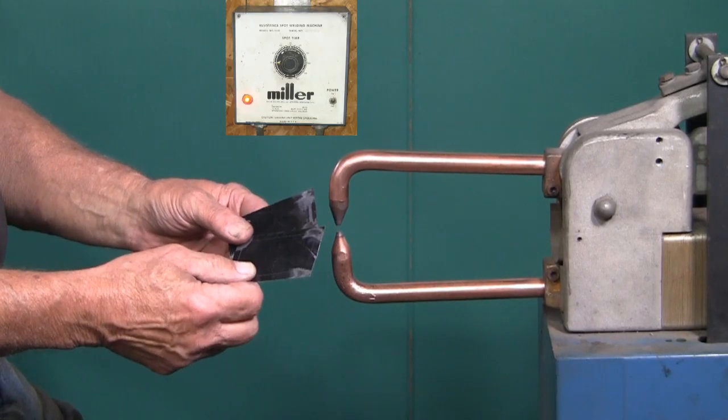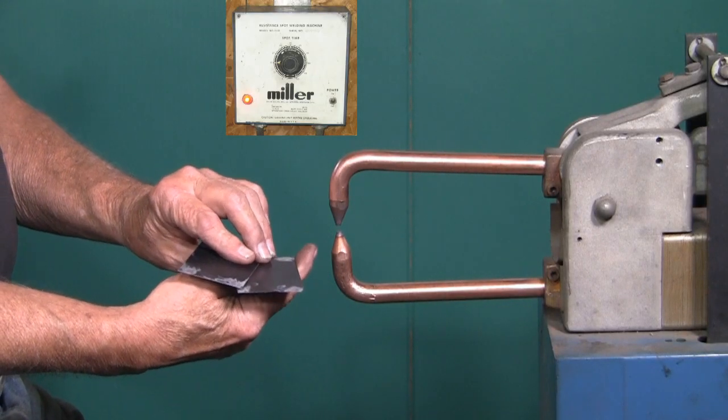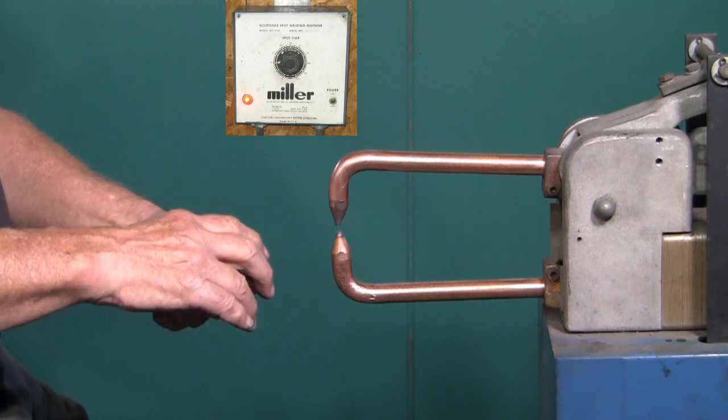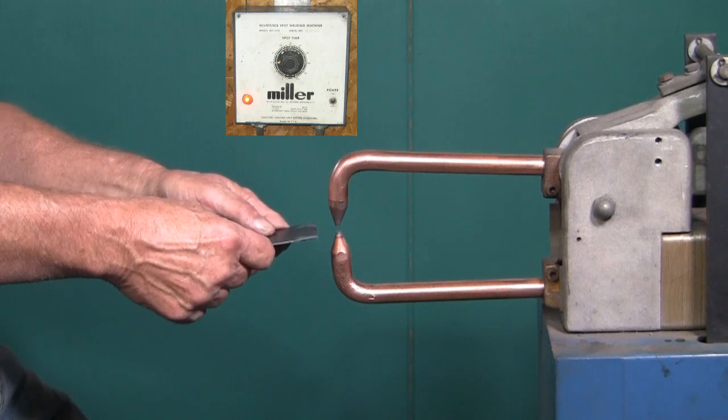Spot welding the 24 gauge mild steel that was painted. As you can see on the timer, I have it set relatively low.